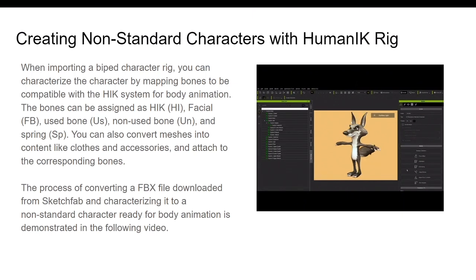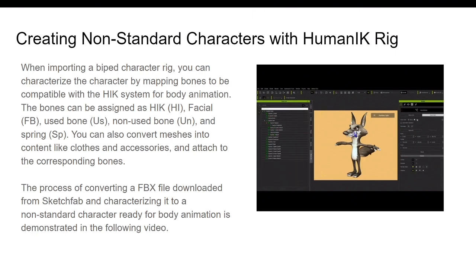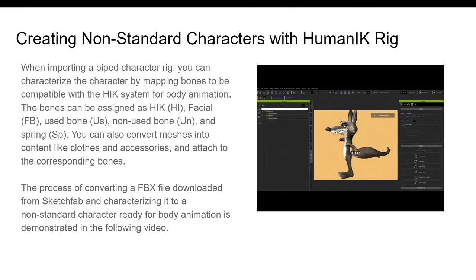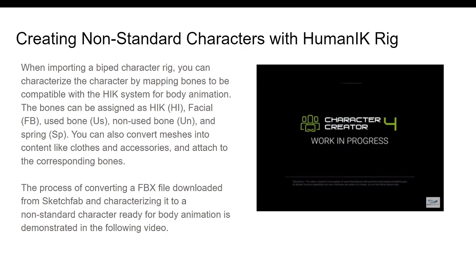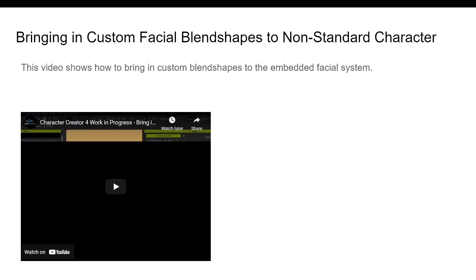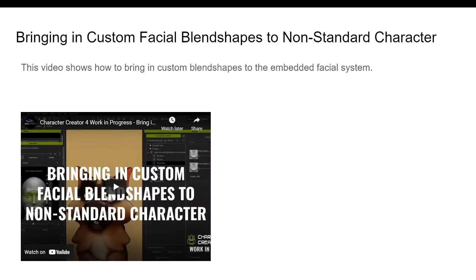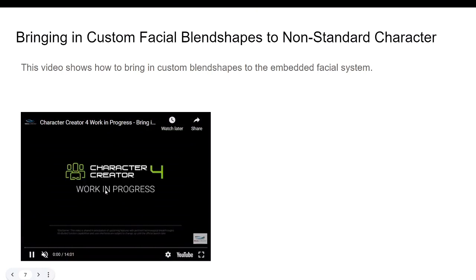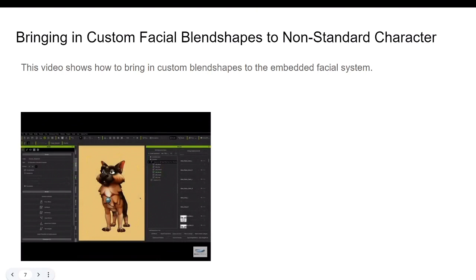The process involves converting an FBX file downloaded from a platform like Sketchfab and categorizing it into a non-standard character ready for body animation. Then we have bringing in custom facial blend shapes to non-human characters — I'll do a separate video to explain this in depth because covering everything in one video would take too long.